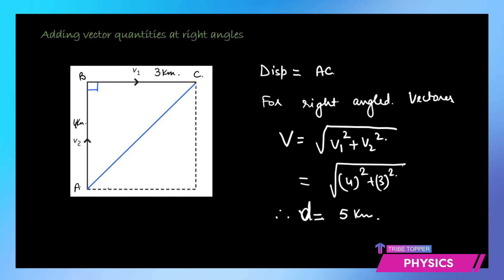So this is how you add two vectors when they are at right angles — applying the Pythagoras theorem gives you the hypotenuse: root of A² plus B². In general terms, if you need to find resultant vector V, it equals the square root of the two components squared: A² plus B². This is how you add two vectors at right angles.